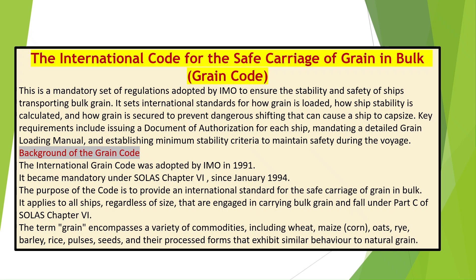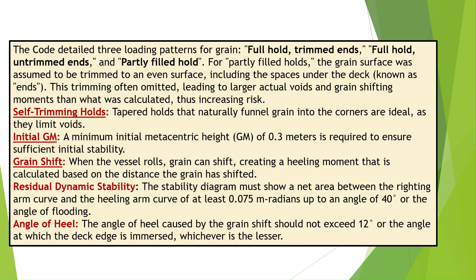The term grain encompasses a variety of commodities, including wheat, maize, corn, oats, rye, barley, rice, pulses, seeds, and their processed forms that exhibit similar behavior to natural grain.